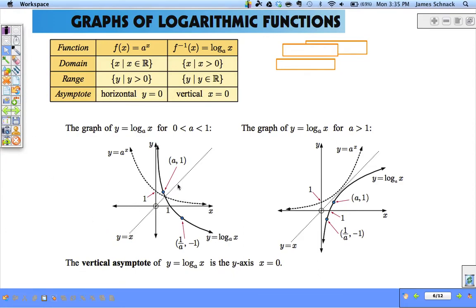Graphically, inverses are a reflection across the line Y equals X. So if I have A to the X, where A is a fraction, so we have exponential decay.